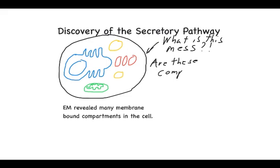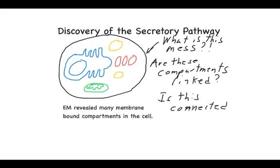One of the key questions was: are these different compartments linked together in some sort of functional way? This question was so important because this work dovetailed with earlier work looking at hormone secretion, particularly insulin, and the question of how different hormones produced inside cells get out of the cells and into the bloodstream.